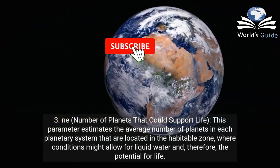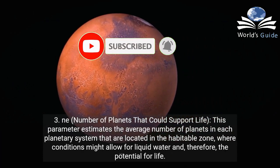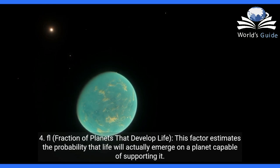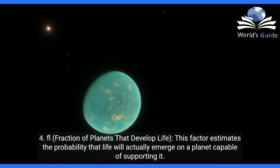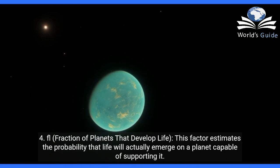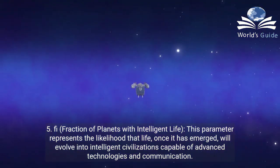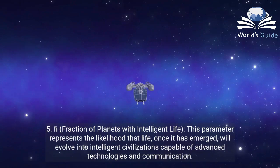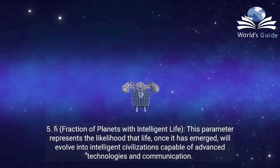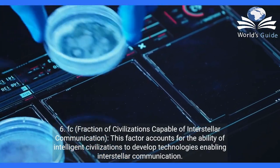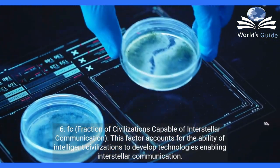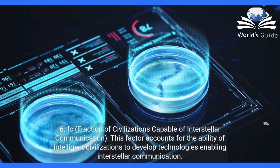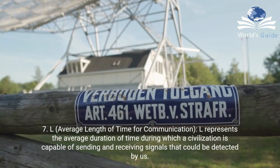Continuing the parameters: ne estimates the average number of planets located in the habitable zone, where conditions might allow for liquid water and therefore the potential for life. Fourth, fl estimates the probability that life will actually emerge on a planet capable of supporting it. Fifth, fi represents the likelihood that life, once it has emerged, will evolve into intelligent civilizations capable of advanced technologies and communication. Sixth, fc accounts for the ability of intelligent civilizations to develop technologies enabling interstellar communication.